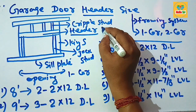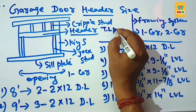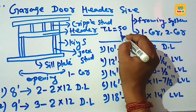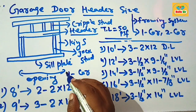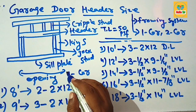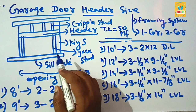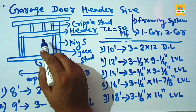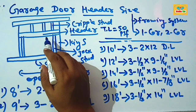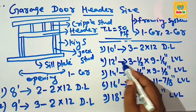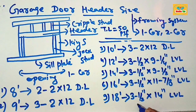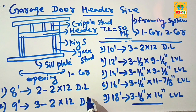The size of header required for different garage door openings depends on the load condition. The total load should be about 50 pounds per square foot, consisting of 40 pounds of live load and 10 pounds of dead load. This framing system supports only the roof load. For different door openings, you need different dimensions of LVL and dimensional lumber. Thank you.